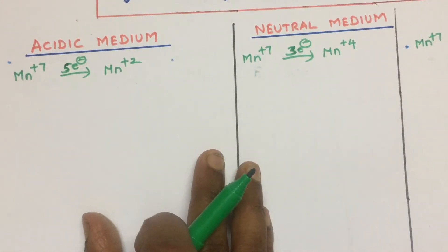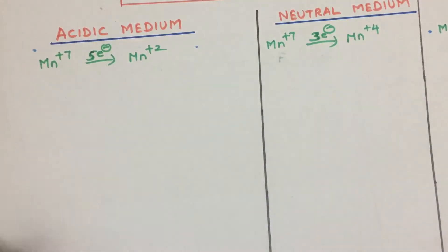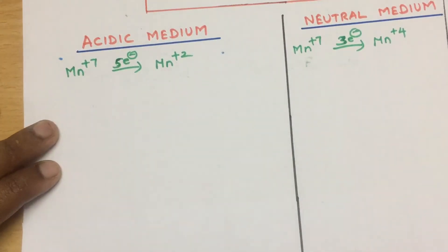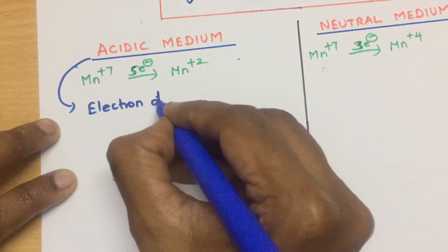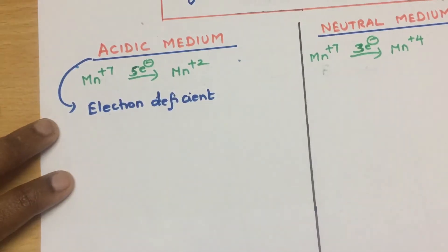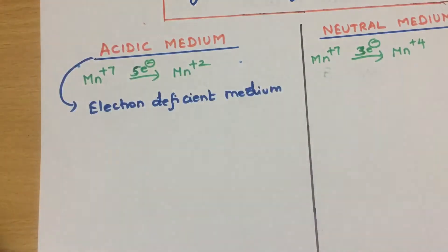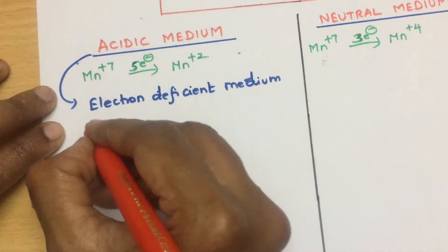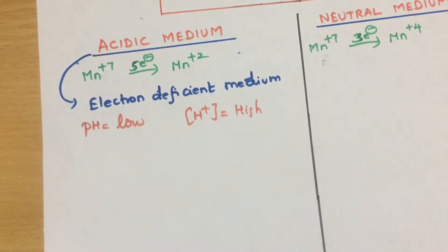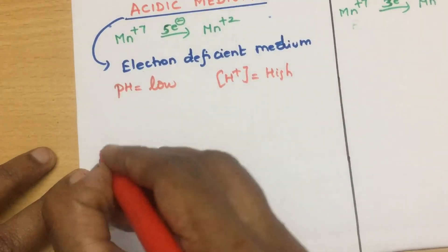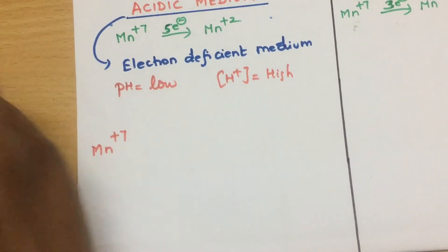KMnO4 is reacting in all media. I am going to give a logical explanation for this. In acidic medium, what you have to know is that it is basically an electron deficient medium. Other than the oxidant, there is no other source of electrons — it is an electron deficient medium. The pH is very low and the hydrogen ion concentration is very high. Now imagine your manganese — it is already in its highest, maximum oxidation state.